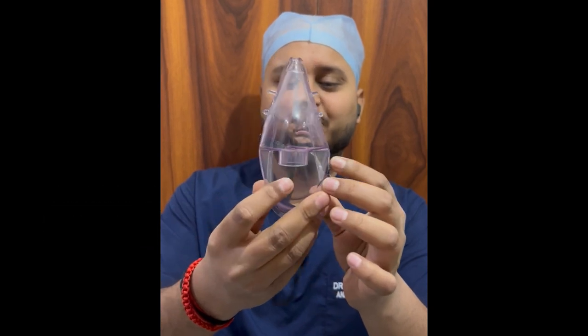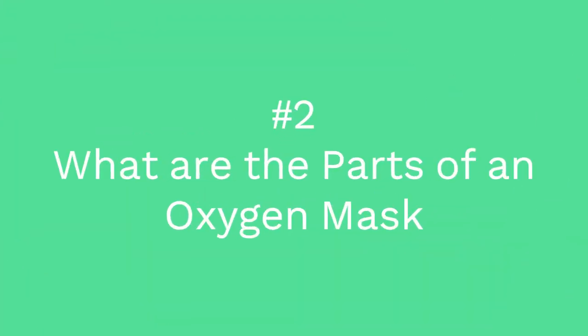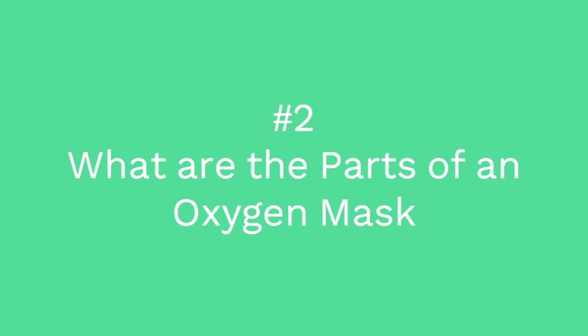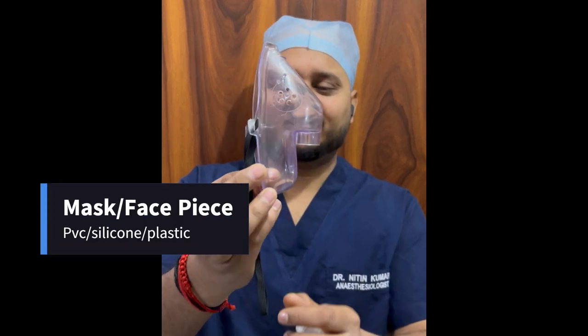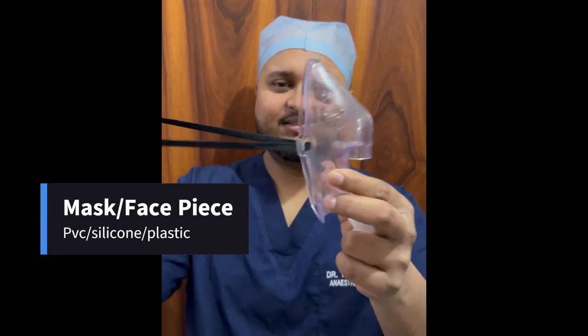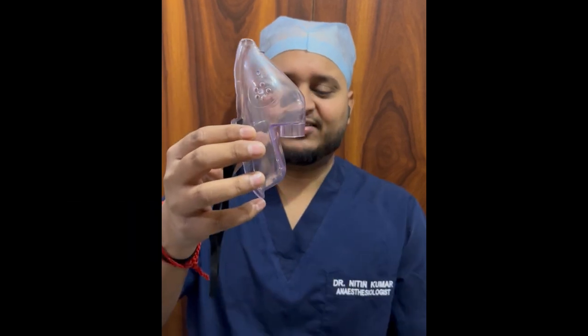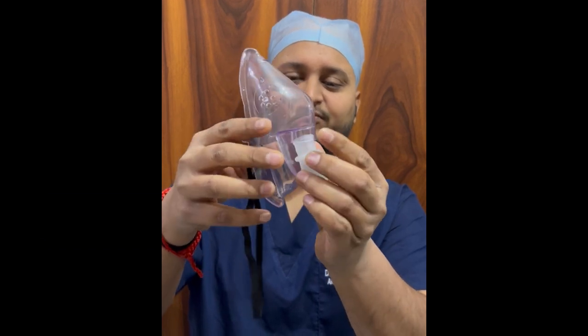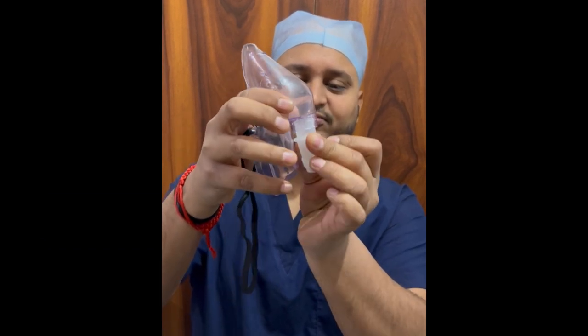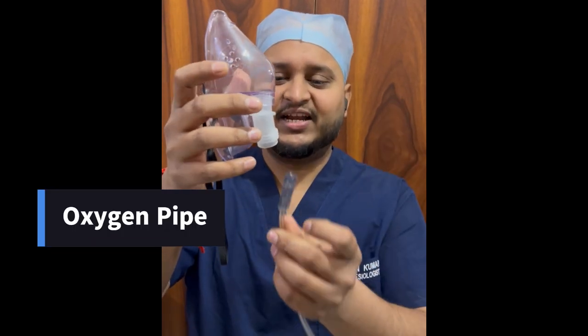This oxygen mask has basically three parts. First is the mask itself — it has a band. Second, a connector which is connected to this part of the oxygen mask. Third is an oxygen pipe which is connected to this part.